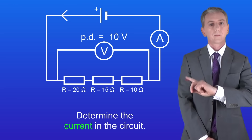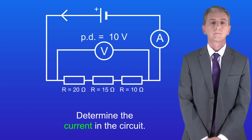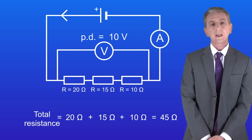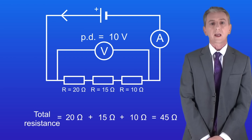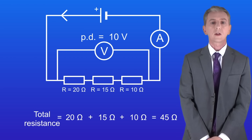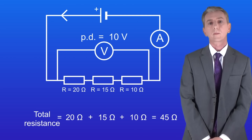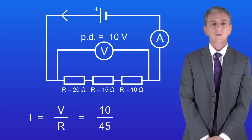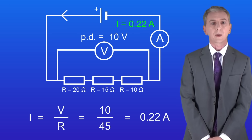Here's a question for you — determine the current in the circuit. Pause the video and try this yourself. We've got a 20 ohm resistor, a 15 ohm resistor, and a 10 ohm resistor all in series. Adding these together gives us a total resistance of 45 ohms. The potential difference across these resistors is 10 volts. We can calculate the current by dividing the potential difference by the total resistance, so 10 divided by 45 gives a current of 0.22 amperes to two decimal places.